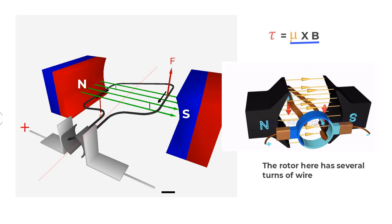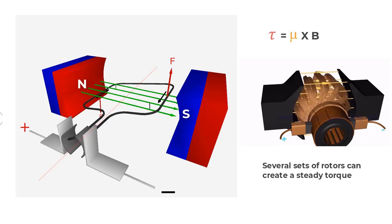This varying torque can be eliminated by having separate set of loops oriented at different angles to produce a steady torque.